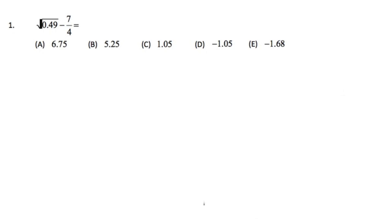For the first question, we are going to figure out what square root of 0.49 minus 7 over 4 is. As we can see, all the answer choices are in decimal form. Therefore, we are going to figure out what square root of 0.49 is in decimal form. Also, we have to convert the fraction 7 over 4 into a decimal.